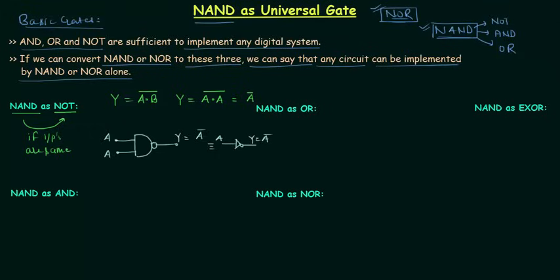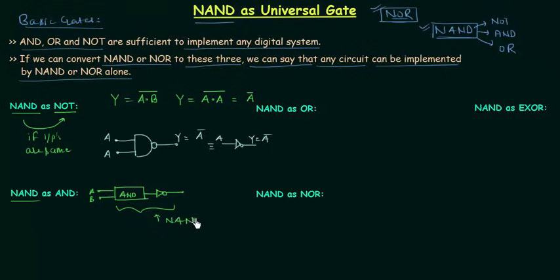Now we will implement AND gate using the NAND gate. If you remember, I told you that we obtain a NAND gate by complementing the output of an AND gate. If we have an AND gate and we complement its output, this works as a NAND gate — the output is (A·B)'. This is something we have already discussed. Now we want the AND gate back, so we simply complement the output of the NAND gate. If you complement the output of the NAND gate you get AND gate, because the complement of (A·B)' is A·B.